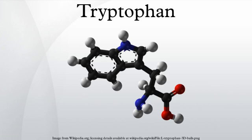Tryptophan is one of the 22 standard amino acids and an essential amino acid in the human diet, as demonstrated by its growth effects on rats. It is encoded in the standard genetic code as the codon UGG. Only the L-stereoisomer of tryptophan is used in structural or enzyme proteins, but the D-stereoisomer is occasionally found in naturally produced peptides. The distinguishing structural characteristic of tryptophan is that it contains an indole functional group.